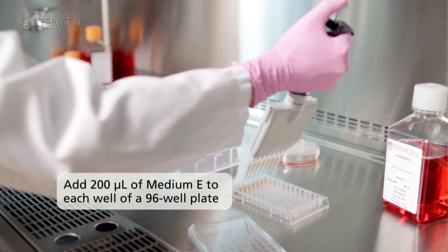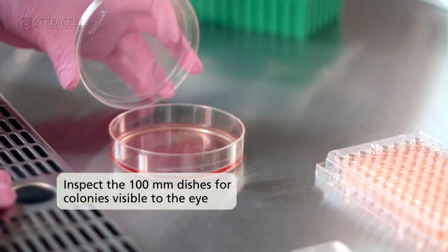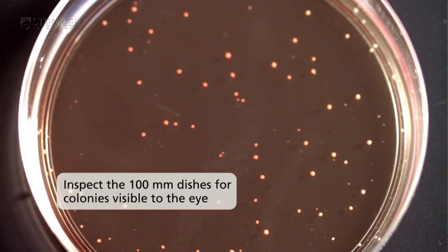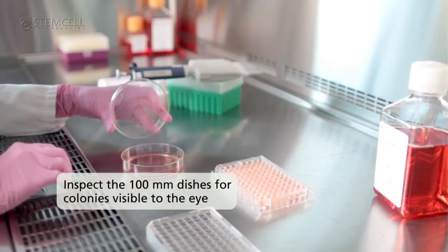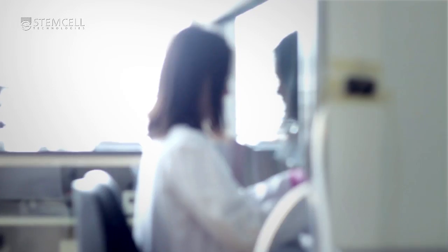Prepare 96 well plates by adding 200 microliters of medium E to each well. Inspect the 100 millimetre dishes for colonies visible to the naked eye. Be careful not to move the plates abruptly to avoid disrupting or smearing the colonies, which tend to be very loose.